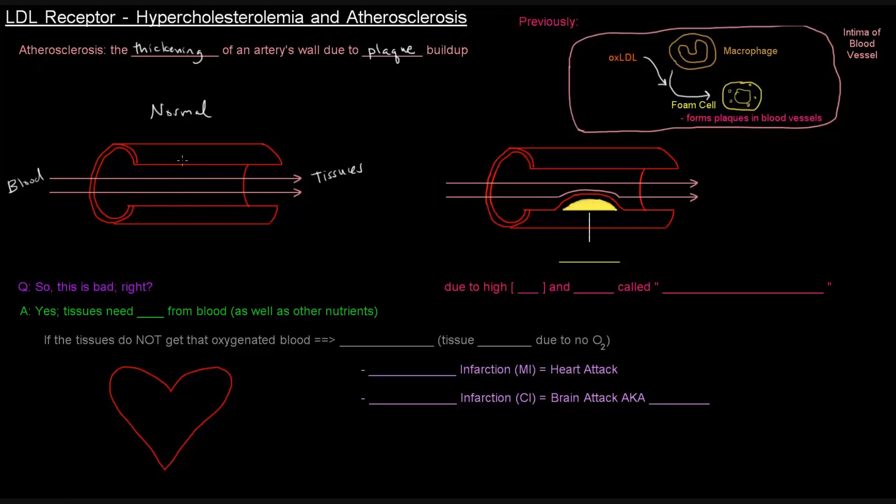Now what can happen is in an atherosclerotic artery, we can basically have a plaque built up in the wall of the artery. And this plaque cuts off the blood's ability to flow through the tube. So we've got an obstruction of blood flow here.